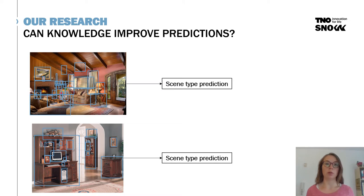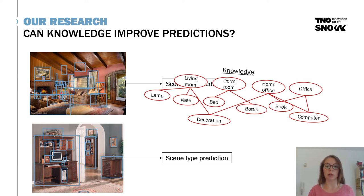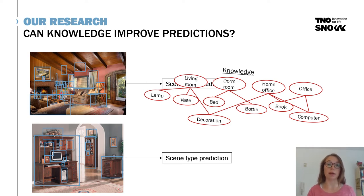What we want to research is whether adding knowledge about the types of rooms you can encounter will help with our predictions. We will look at the knowledge that you can provide — for example, a living room can contain a lamp and a vase, or a home office can contain a book or decoration. If we add this type of knowledge, we want to see if our predictions about room types improve above only using the data itself.